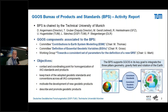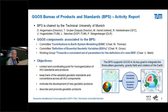I would like to start with this overview slide because not everyone is very familiar with the activities of the different components. The BPS is shared by the Technical University of Munich, and on the graph here you can also see the staff members of the BPS. There are three GGOS components associated to the BPS: two committees — one on contributions to earth system modeling, and the other on the definition of essential geodetic variables — and a working group towards a consistent set of parameters for the definition of a new GIS.